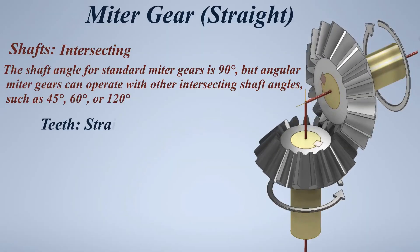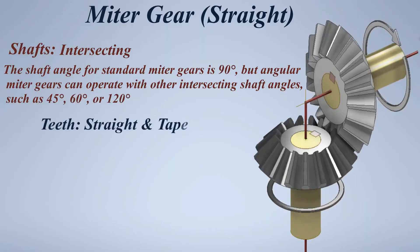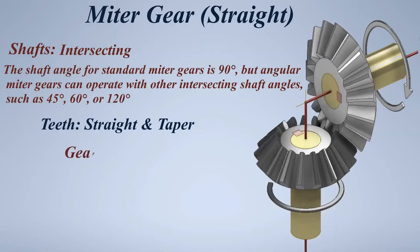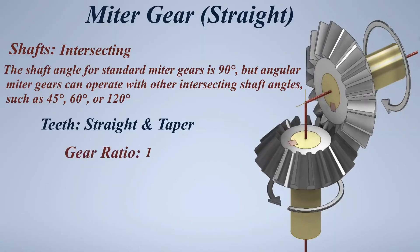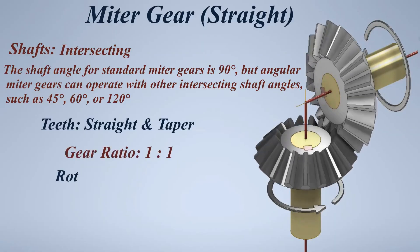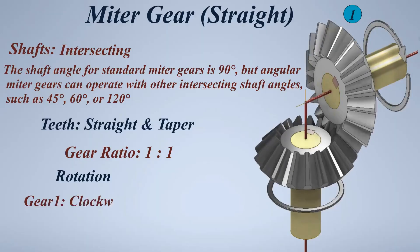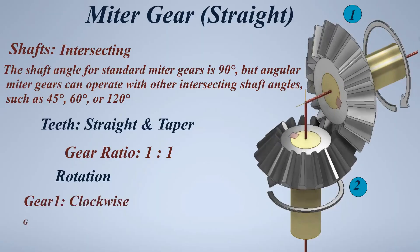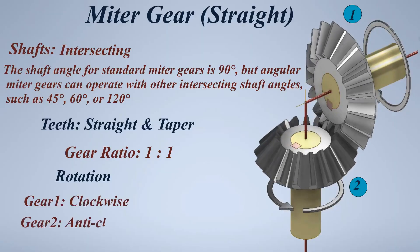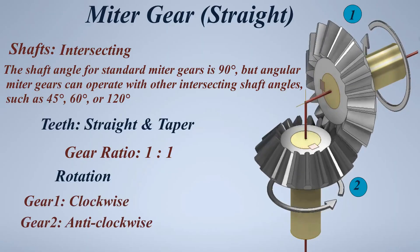Miter gear — straight teeth variant. Teeth: straight and taper. Gear ratio: 1 to 1. Rotation — Gear 1: clockwise, Gear 2: anticlockwise.